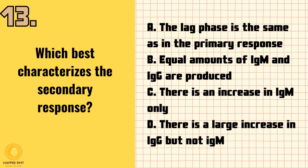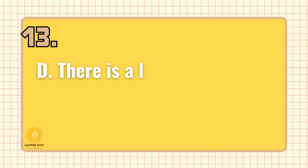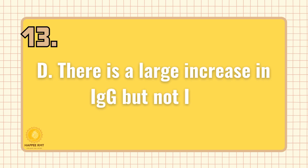Number 13. Which best characterizes the secondary response? A. The lag phase is the same as in the primary response. B. Equal amounts of IgM and IgG are produced. C. There is an increase in IgM only. D. There is a large increase in IgG but not IgM. Answer is D: There is a large increase in IgG but not IgM.